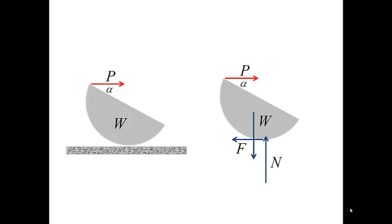The corresponding free body diagram involves four forces: the applied force P, the weight, the normal force at the contact, and the tangential or friction force at the contact.